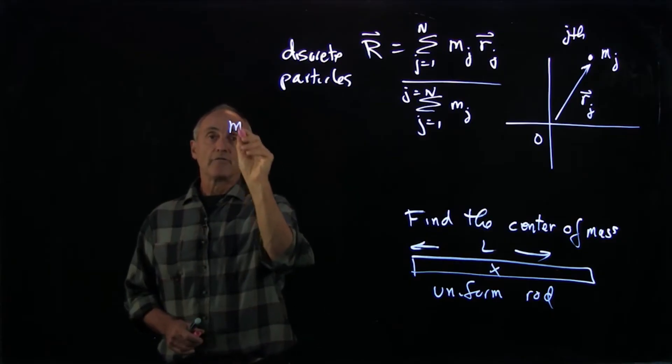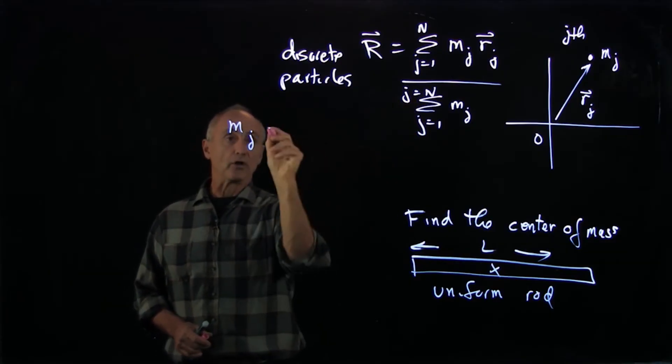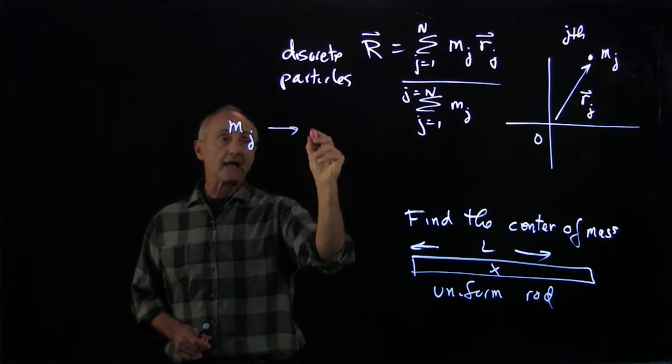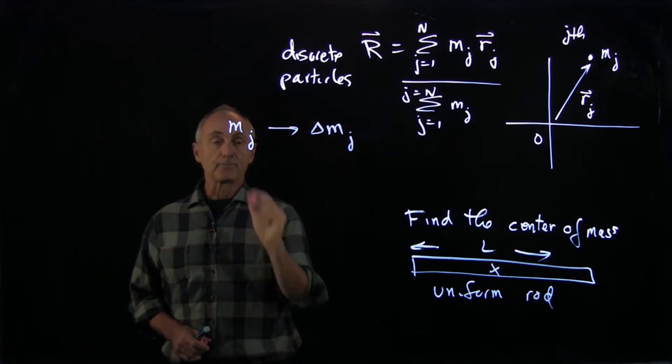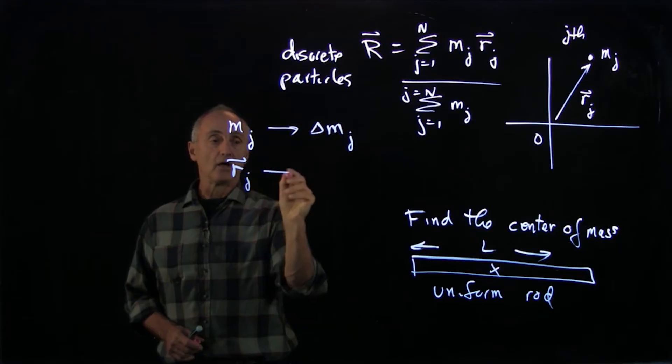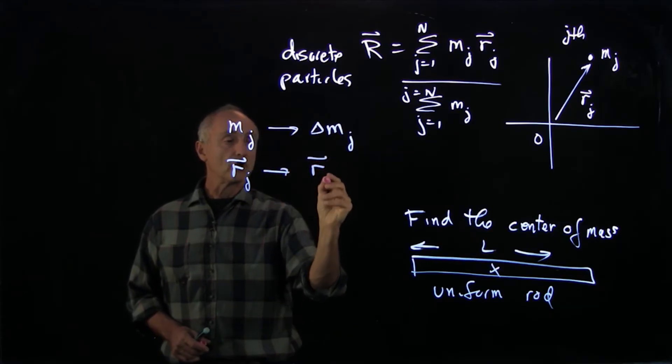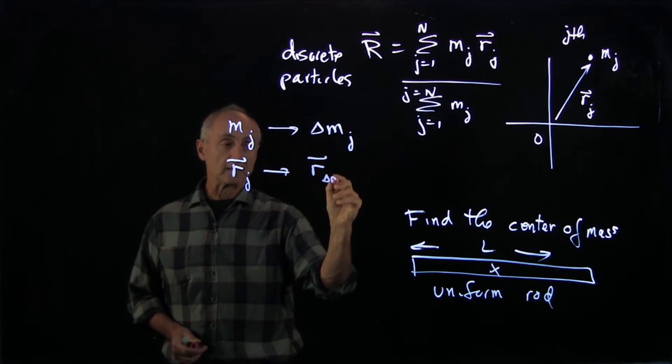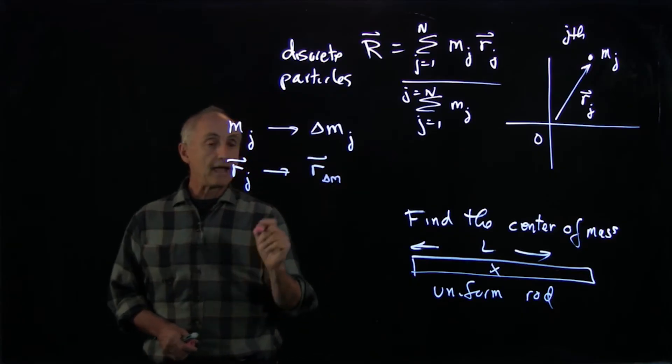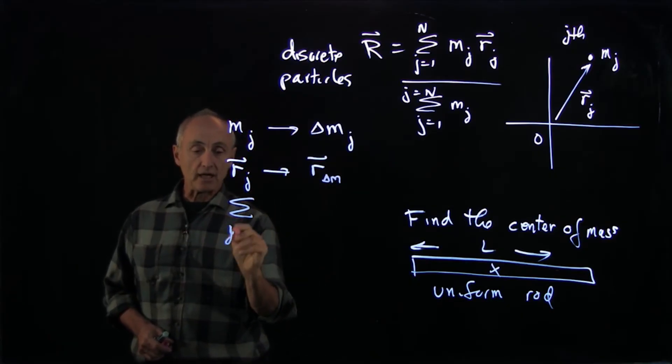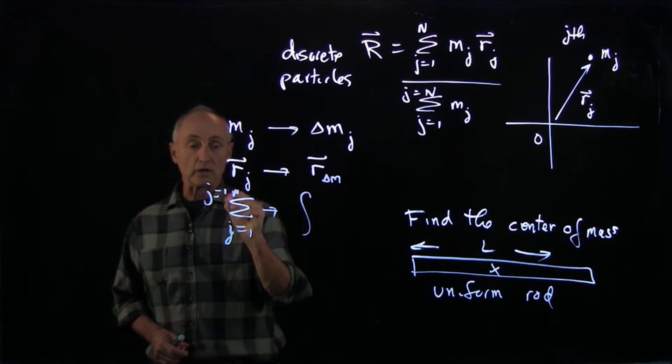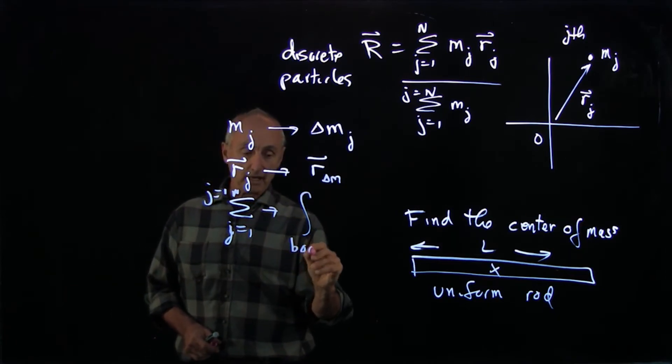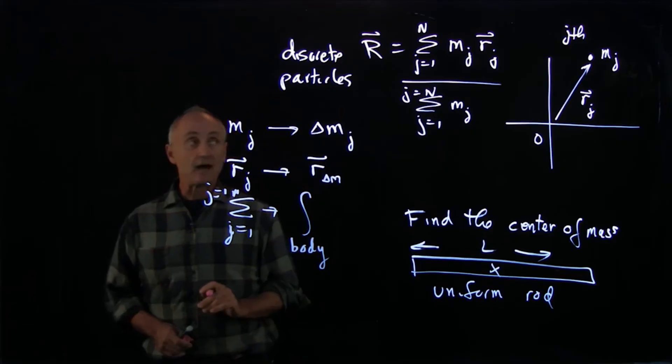Here's how it works: for each discrete particle, we're going to look at that as some mass element delta mj. Our vector rj will go to a vector for this mass element, I'll just write it delta m. And our sum from j goes from 1 to n is actually going to go to an integral over the body. Let's see how that looks.